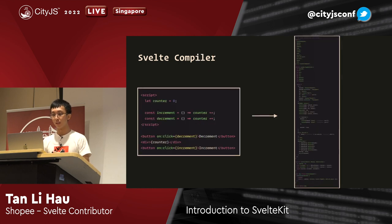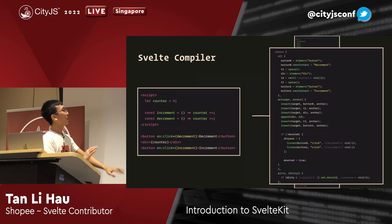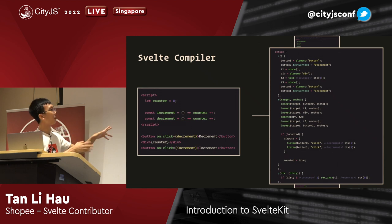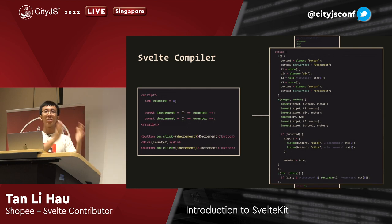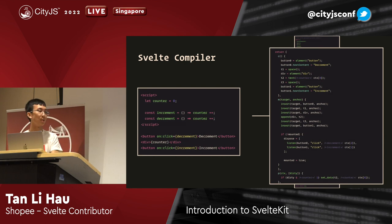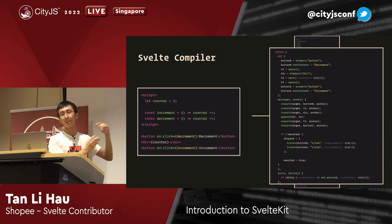So how does this work? Svelte itself is not just a framework - it's a compiler-based framework. There's a Svelte compiler that compiles your Svelte code into JavaScript. You can see it compiled to DOM operations - how you create the button element, how you set text content and stuff like that. This sets Svelte apart from other frameworks. Some frameworks use virtual DOM - you render a DOM tree structure, compare, then update. But Svelte manipulates DOM elements through operations already generated for you, generating as optimized and small output as possible.